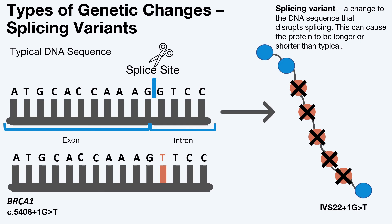In this example, there is a splice site variant in the gene. The variant changes the letter G to a T. This variant is located in a splice site where the cell recognizes and removes the introns from the exons. This variant causes the cell to no longer be able to recognize this splice site, leading to the removal of an exon. Removing an exon then leads to a shortened protein. This is represented by the red dots with the x, indicating that part of the protein should be present, but because of this variant is missing. When a protein is shortened, it can impact how the protein functions in the body.